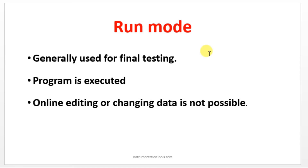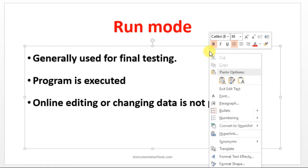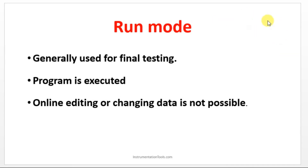Next we have Run Mode. Once you have done the program, compiled it, and are ready to monitor, you can go to the Run Mode, which is like a final testing. What logic you have done, you are going to see the result in the Run Mode only. If the PLC software is not in the Run Mode, you cannot see the updated or current status of output. In this mode, you cannot change or edit a program — this is only to view what is exactly happening.